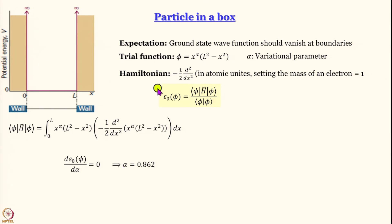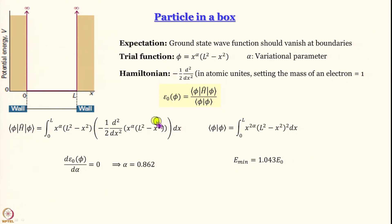If you do the tedious calculation and equate d(epsilon_0)/d(alpha) = 0, it turns out that the value of parameter alpha is 0.862 when the minimum in epsilon_0 is obtained. The wave function finally becomes phi = x^0.862 · (L² - x²). E_min turns out to be 1.043 · E_0, where E_0 is the exact value of energy obtained earlier for particle in a box. We are away from it by only 4 percent — even though we used such a strange, weird trial function which looks nothing like the actual exact wave function.